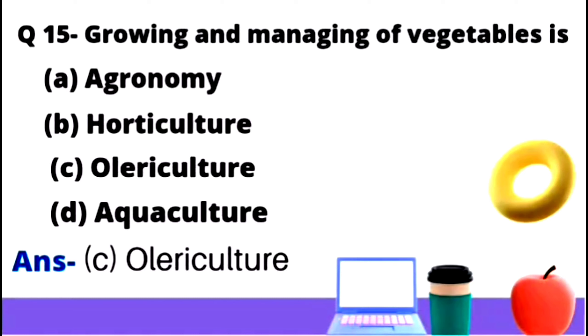Question number 15: Growing and managing of vegetables. This is option A agronomy, option B horticulture, option C olericulture, and option D aquaculture.